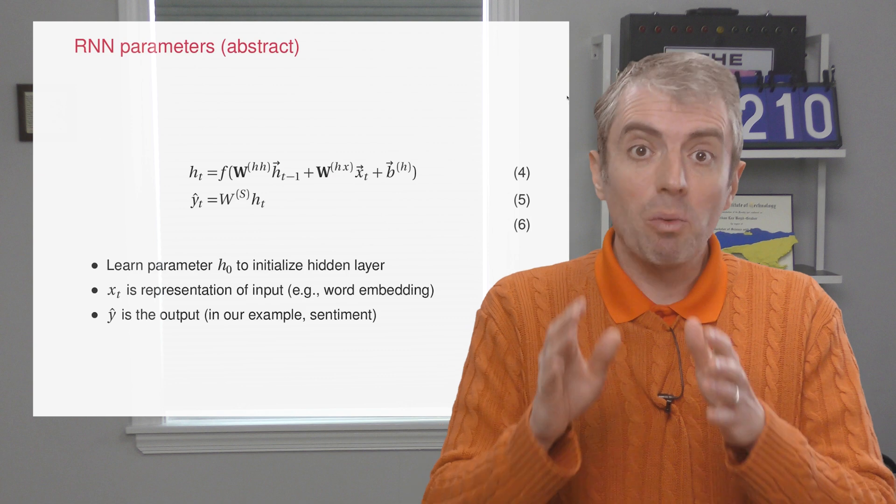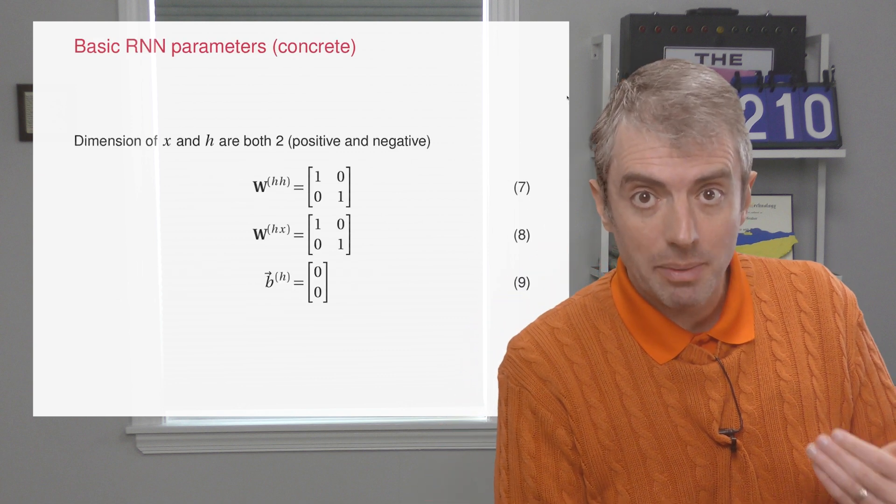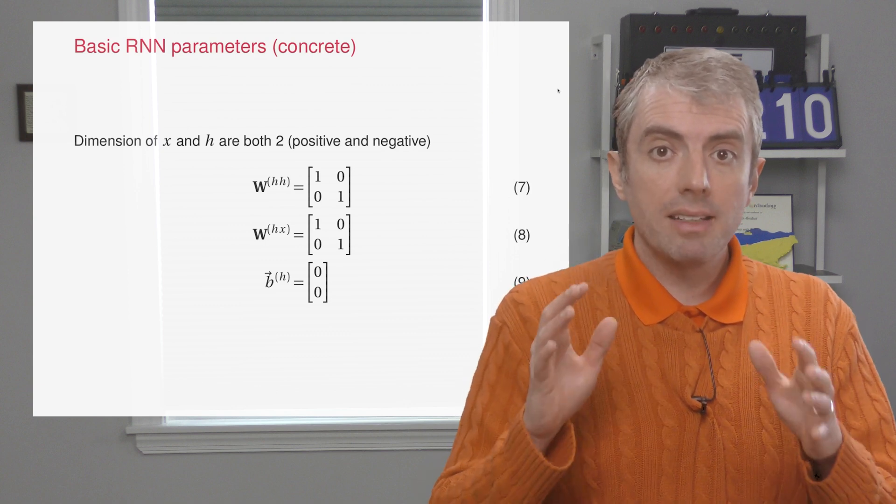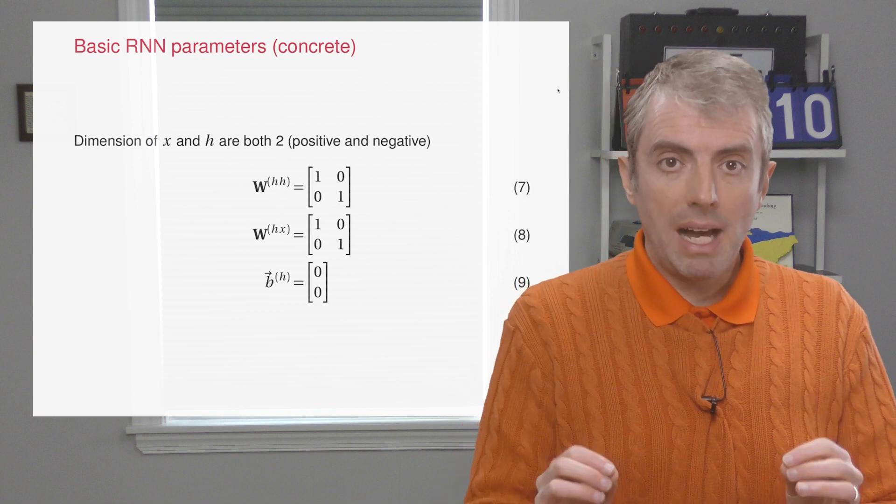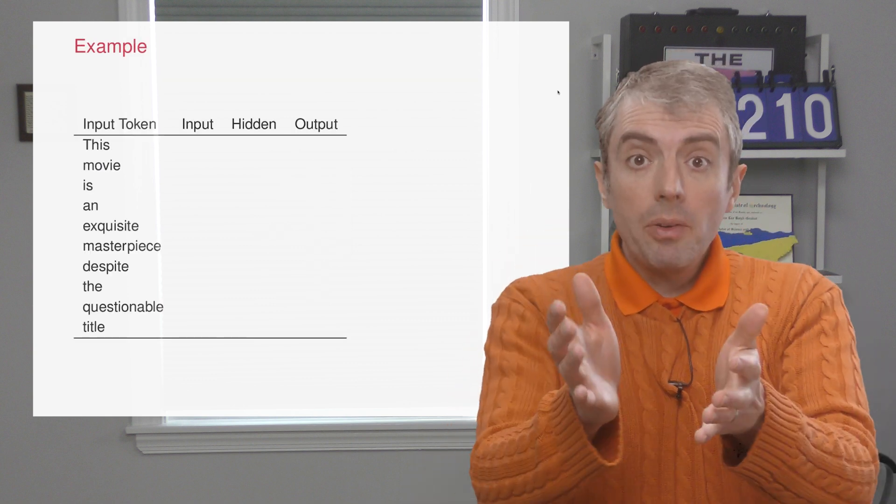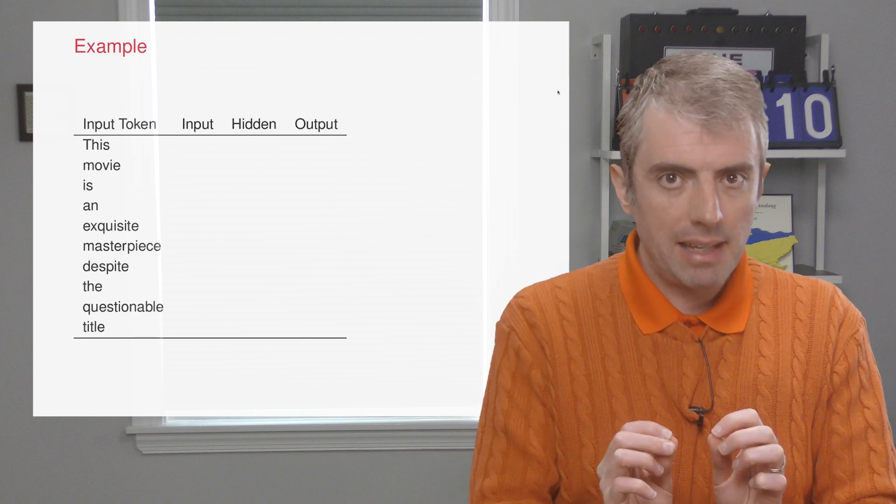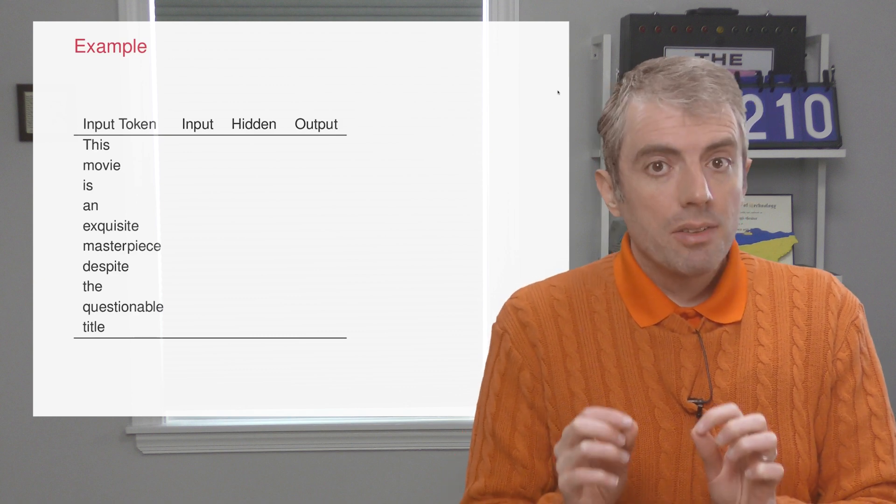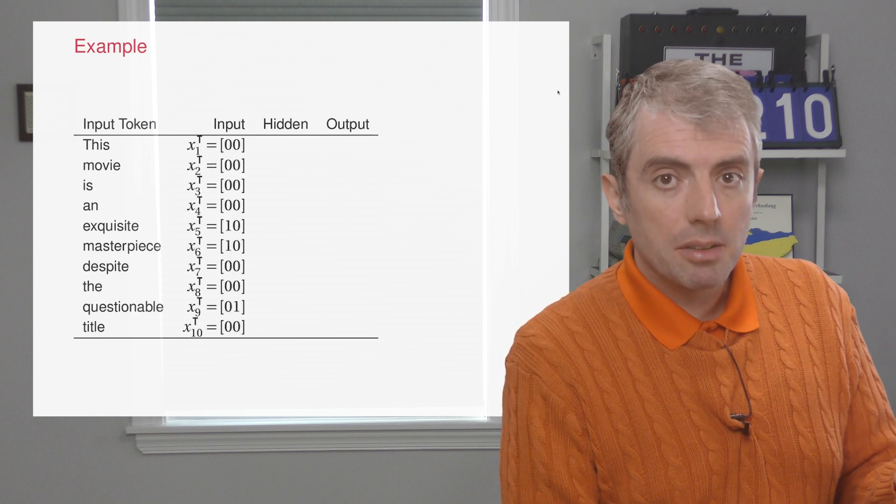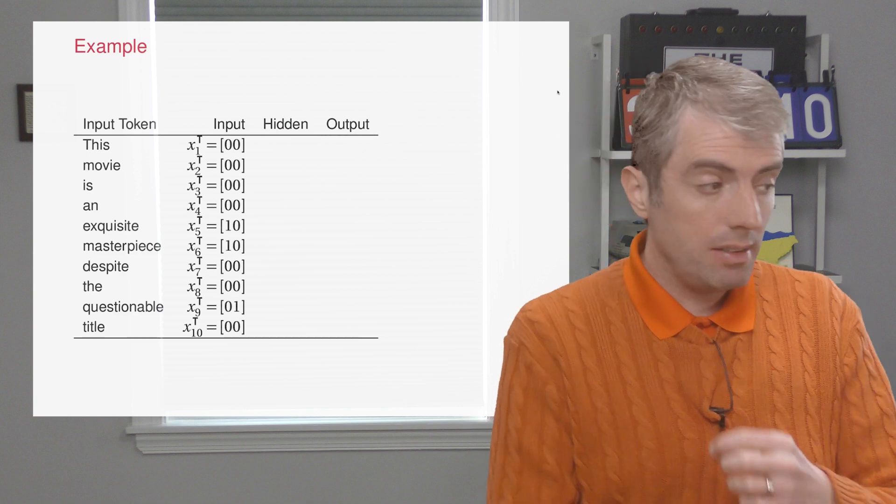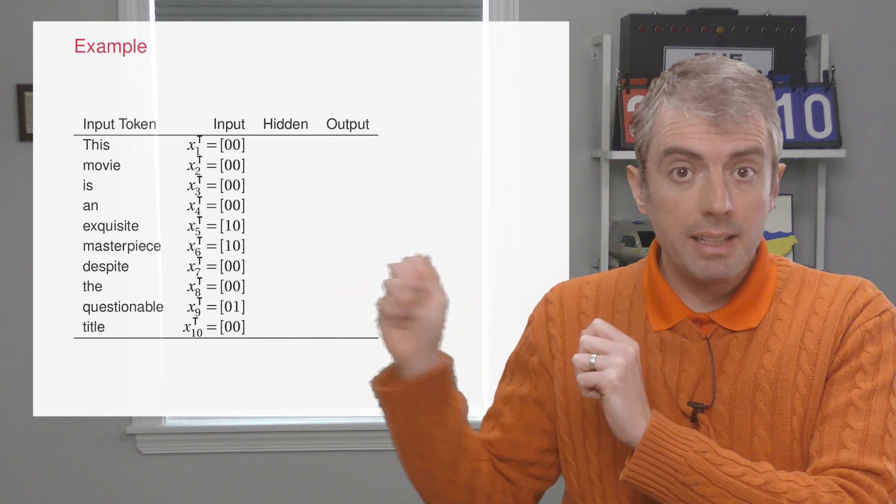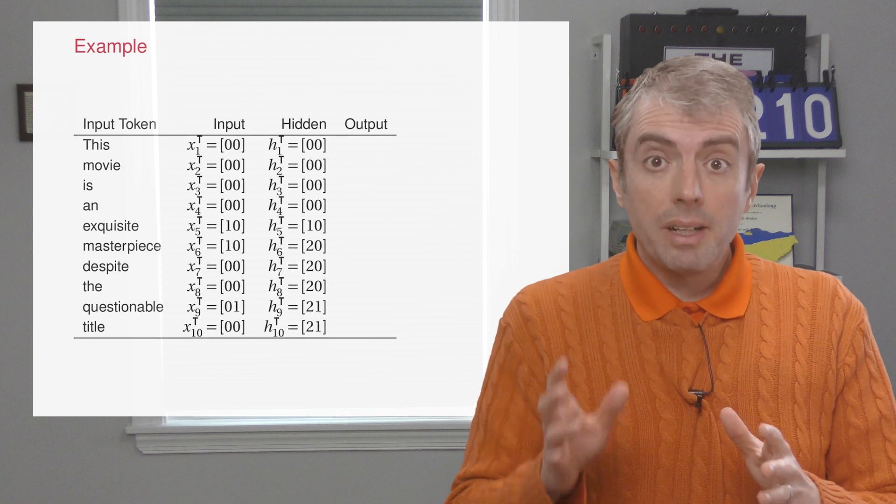So now let's go through the matrices that we'd need for this to work the way that we want it to on our toy sentiment example. Both the observation dimension and the hidden dimension are two, and the matrices end up being quite simple. The zero vector for the bias and the identity for both the observation and hidden evolution matrices. So let's go through an example. This movie is an exquisite masterpiece, despite the questionable title. So that corresponds to observations that look like this. Exquisite and masterpiece have one in the first dimension, questionable has a one in the second index,